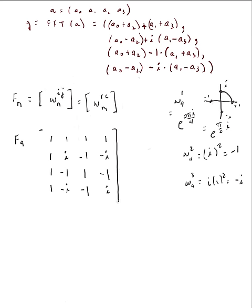So that's our complete 4×4 DFT matrix. Now I want to eyeball the matrix-vector multiplication to see if we end up with the same answer as we got using the recursive fast Fourier transform algorithm.